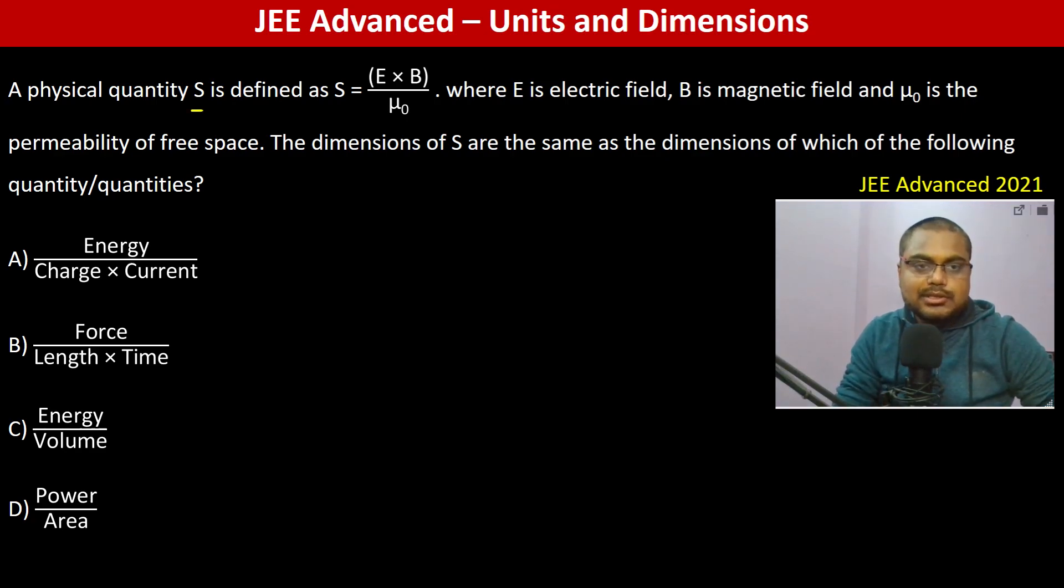A physical quantity S is defined by S equals E cross B by mu₀, where E is electric field, B is magnetic field, and mu₀ is the permeability of free space. We need to find the dimensions of S and match them with the given quantities.